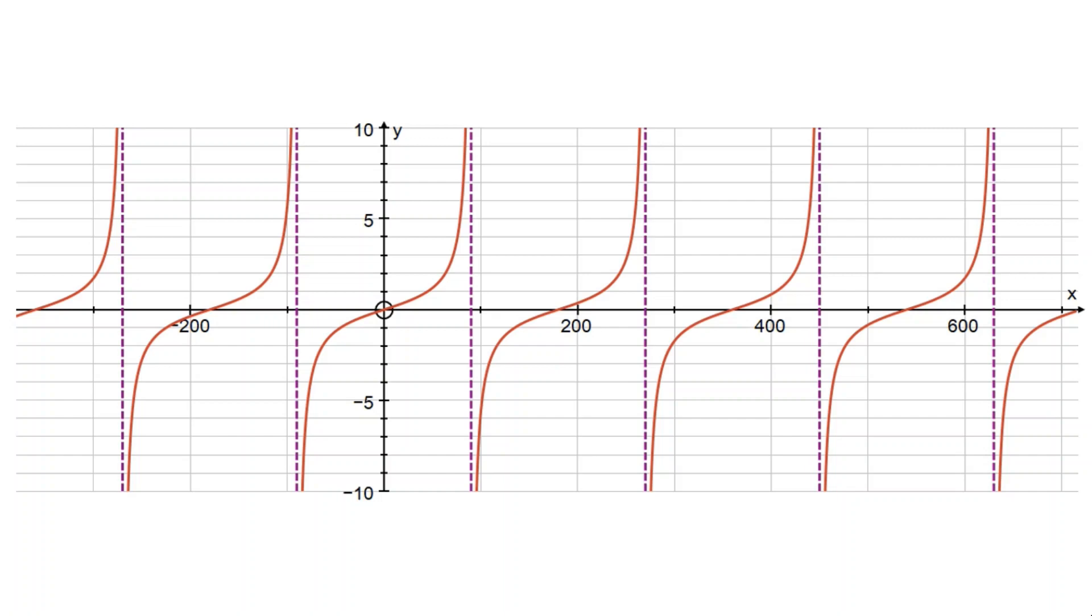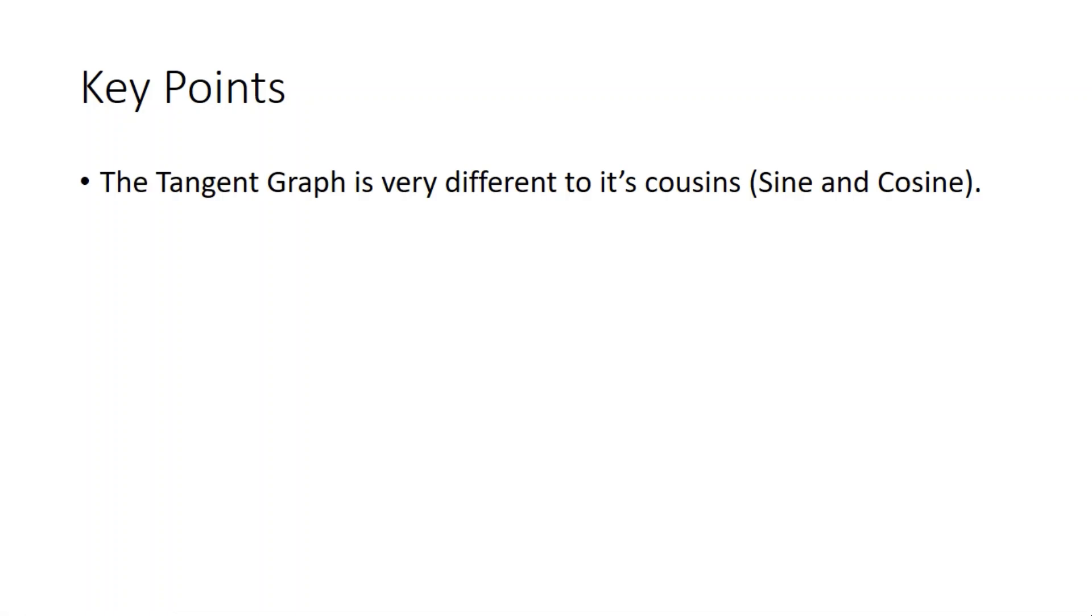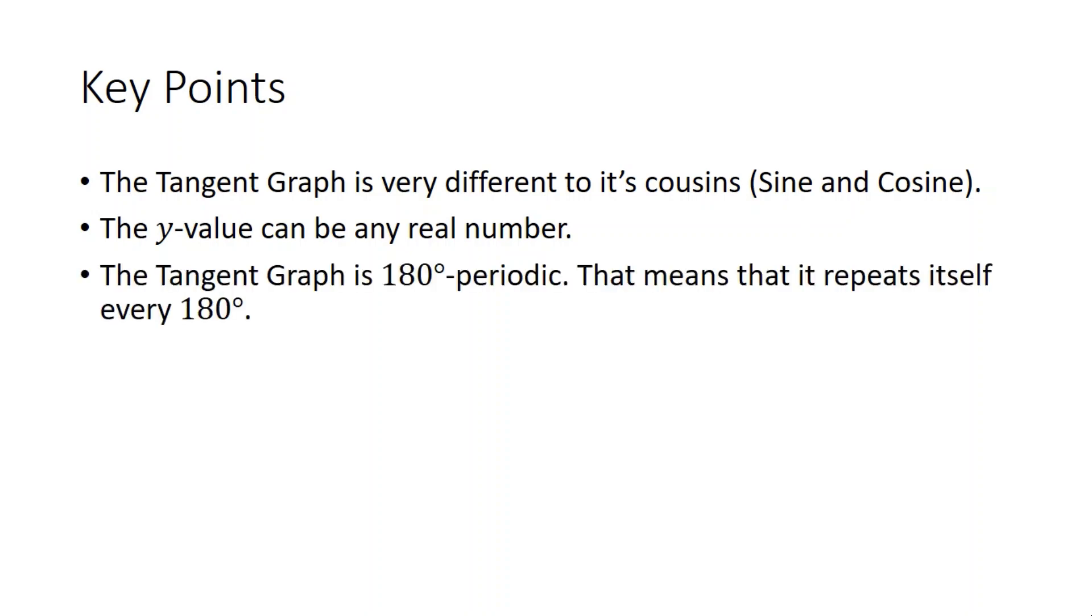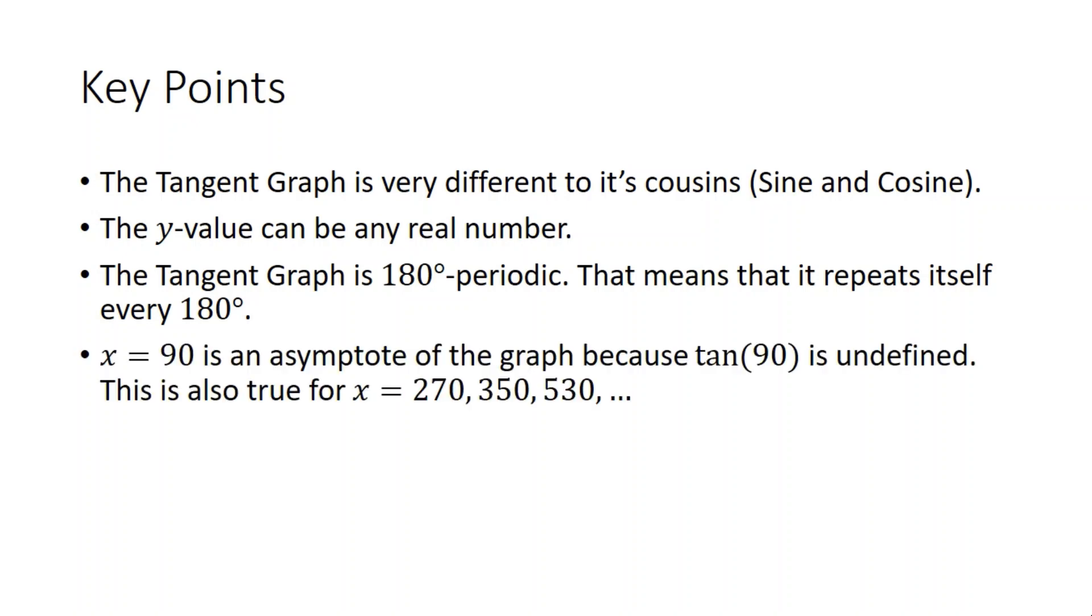Weird, but once we've got them plotted, they actually turn out to be a little bit easier than their cousin. The key points in this video: The tangent graph is very different to the sine and the cosine graph. The y value of a tangent graph can be any real number. So that is different to sine and cos where it could only be smaller than one and bigger than negative one. The tangent graph is 180 degrees periodic, which is different to sine and cosine which were 360 degree periodic. And finally, we have these things called asymptotes which are where the graph is undefined. So tan of 90 is undefined, tan of 270 is undefined, so on and so on.